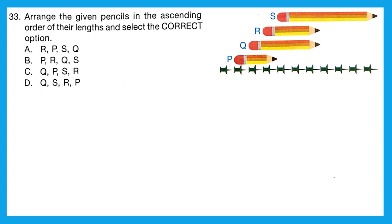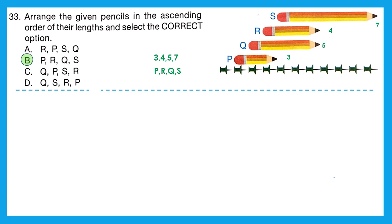Question 33: 'Arrange the given pencils in ascending order of their lengths.' Ascending order is increasing — small to largest. Measuring pencils by pins: P equals 3 pins, Q equals 5 pins, R equals 4 pins, S equals 7 pins. Arranging 3, 4, 5, 7 in ascending order gives P, R, Q, S. That is our right ascending order, which is option B.